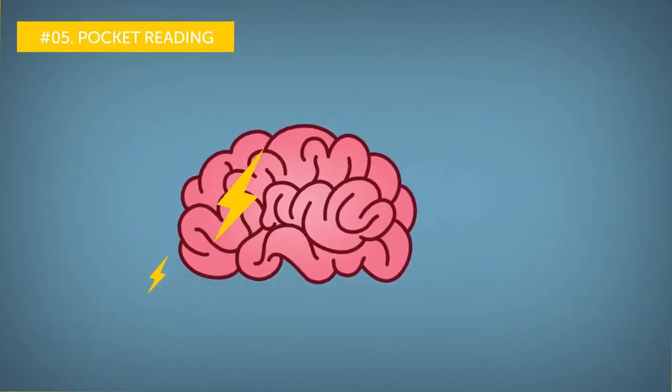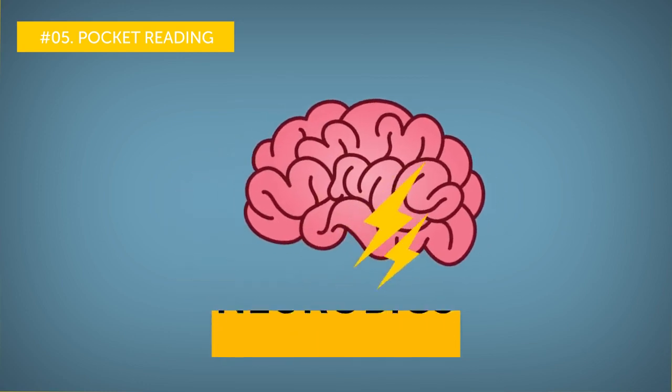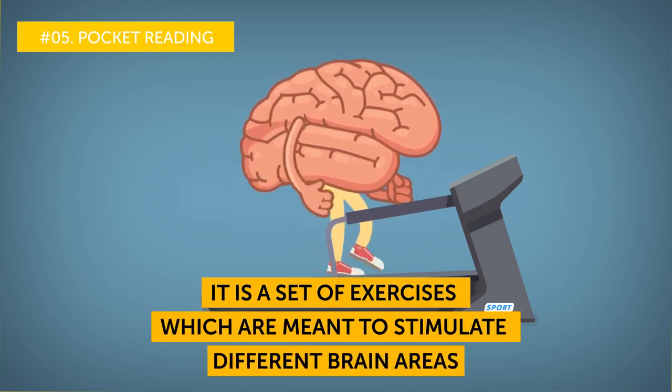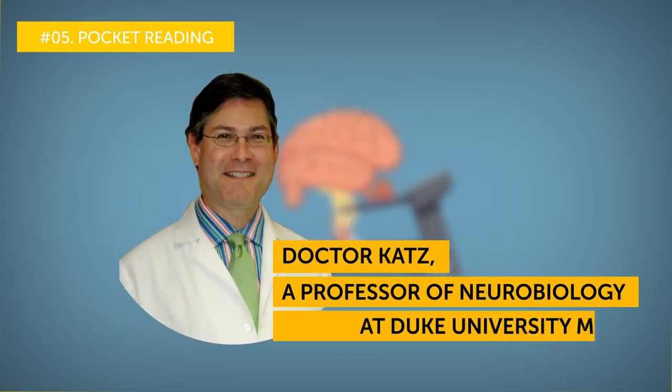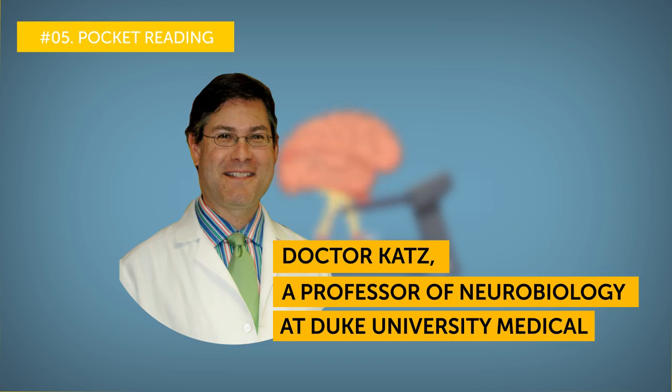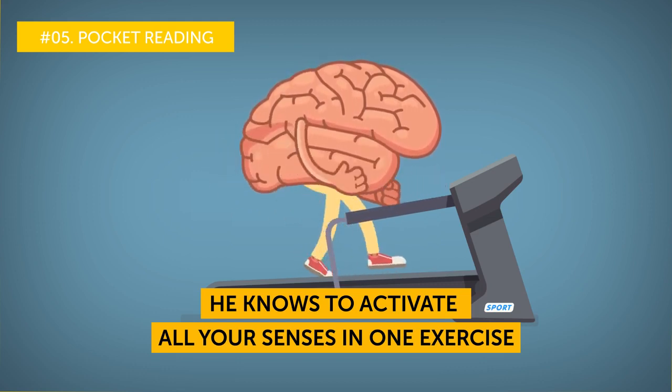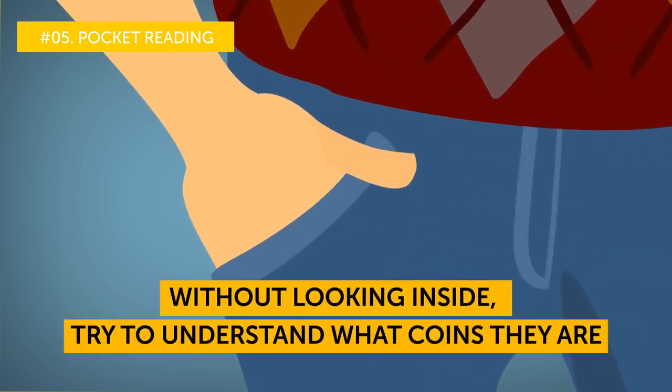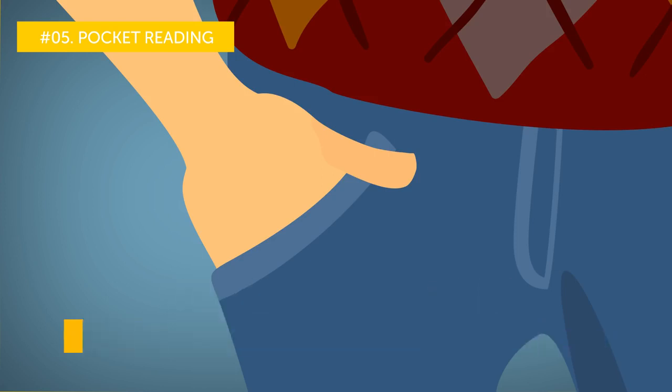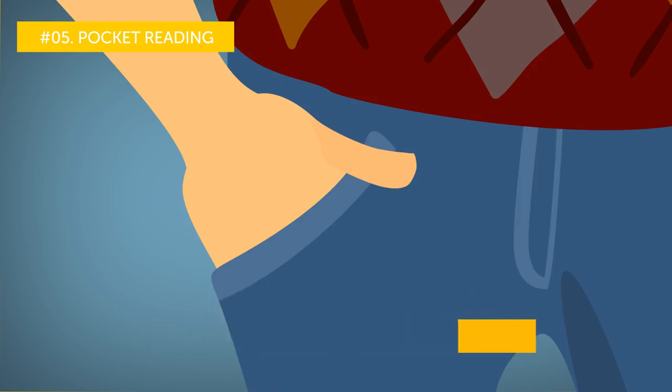Number five, pocket reading. Have you ever tried neurobics? Well, I've tried being neurotic but it's not as much fun. Now neurobics, you're about to do it. It is a set of exercises which are meant to stimulate different brain areas in what might seem like unusual ways. The term neurobics was made up by Dr. Katz, a professor of neurobiology at Duke University Medical. He knows to activate all your senses in one exercise. Doing that is very good for your brain. Put some coins in your pocket. Now without looking inside, try to understand what coins they are. Feel them. Their size, texture, and edges can tell you a lot. Now see if you guessed it right.